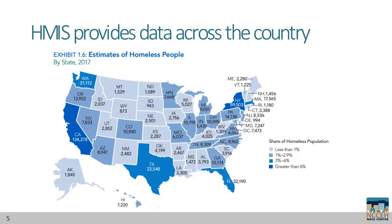HMIS also provides data across the country. Collecting accurate data consistently allows us to contribute to the national perspective. Here is the most recent data from the Annual Homeless Assessment Report, or AHAR, delivered to Congress every year.